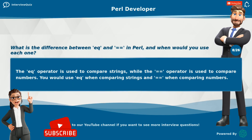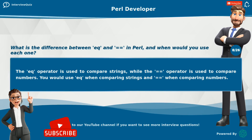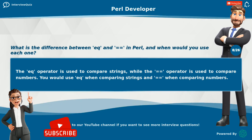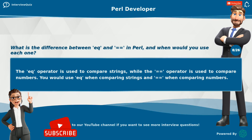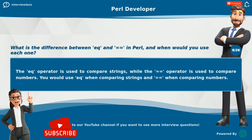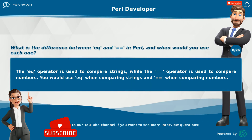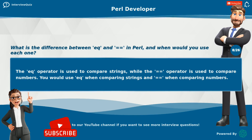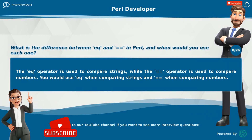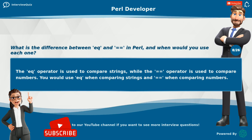What is the difference between eq and == in Perl, and when would you use each one? The eq operator is used to compare strings, while the == operator is used to compare numbers. You would use eq when comparing strings and == when comparing numbers.